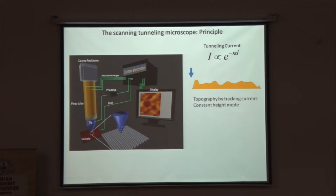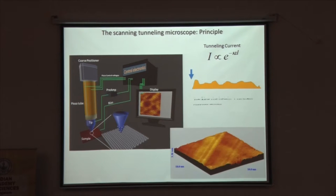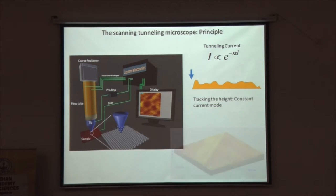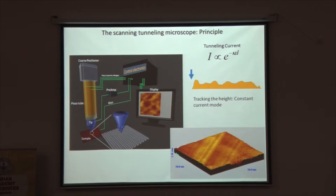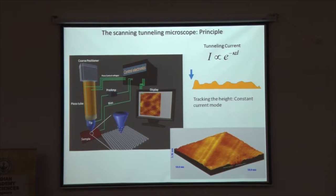In practice, this is not what you do because if you do that, you might crash the tip on one of the hillocks. Instead, you try to maintain the current constant through a feedback, and you take the tip up and down and you track how much you are going up and down. If you do that, you can get a surface like this. For example, this is a 50 nanometer by 50 nanometer surface of niobium nitride where you see atomic scale terraces.